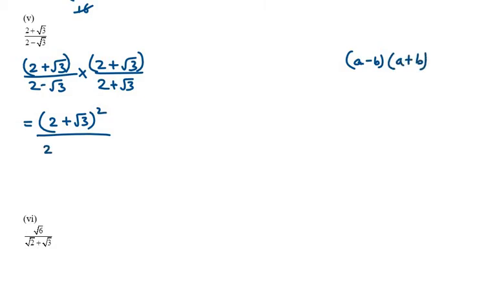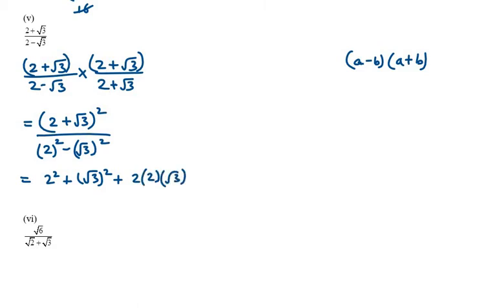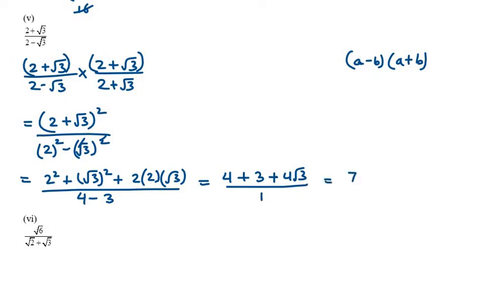A is 2, so the denominator is 2 square minus under root 3 square. In the numerator we open the bracket using a plus b whole square. It will be 2 square plus under root 3 whole square plus 2 into 2 into under root 3, over 4 minus 3. Under root and square cancel. So we get 4 plus 3 plus 4 under root 3 over 1. So 4 plus 3 is 7, giving 7 plus 4 under root 3. That's your answer for question number 5.